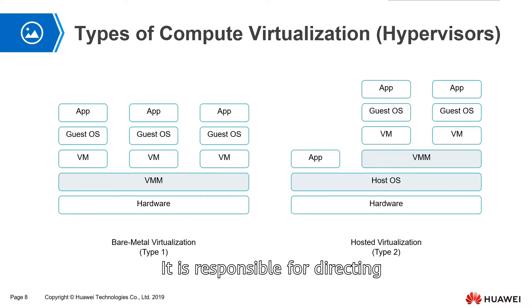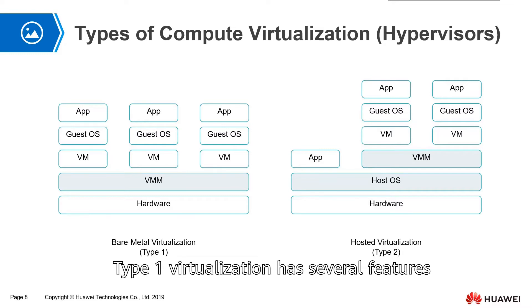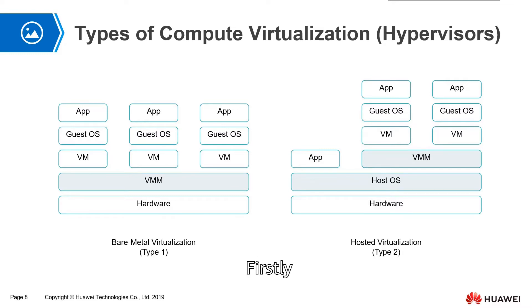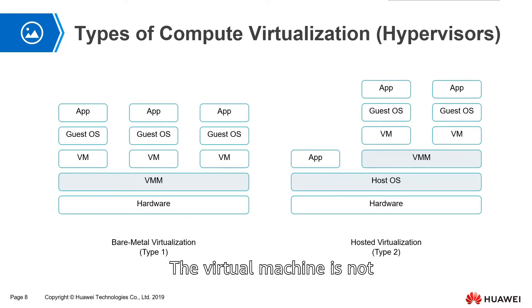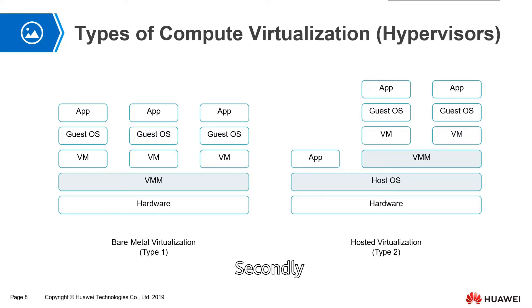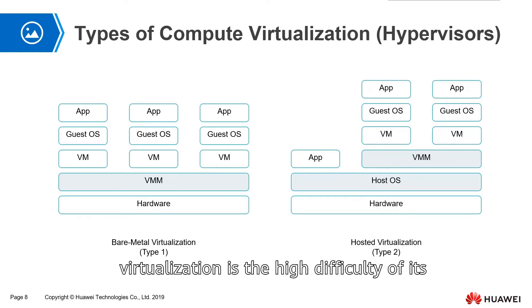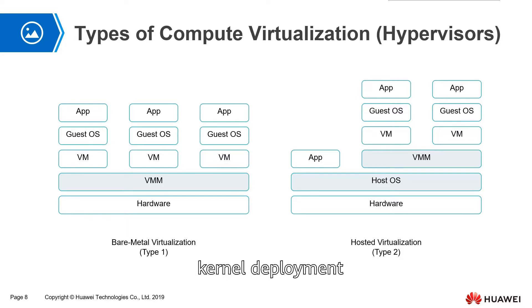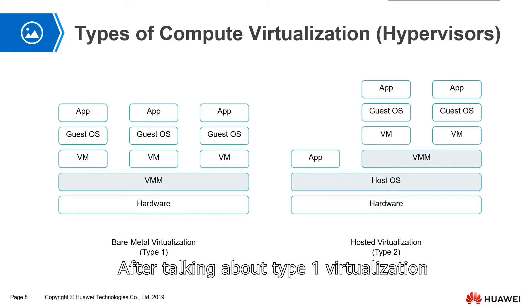It is also responsible for directly interfacing with hardware. Type 1 virtualization has several features. As an advantage, the virtual machine is not dependent on the host operating system and supports a variety of operating systems. A small disadvantage of type 1 virtualization is the high difficulty of its virtualization layer kernel deployment.